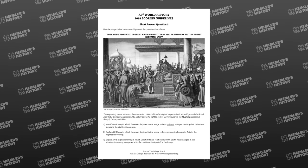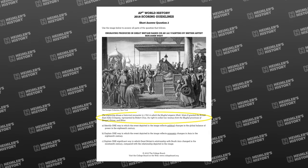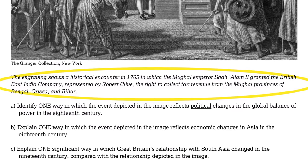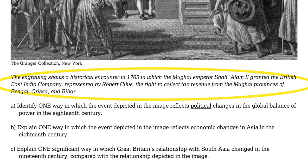I'll start with an example from AP World and then go on to AP US. This comes from the 2018 exam — a stimulus-based SAQ. Let's take a moment to figure out what we're looking at. Always read the explanations they give you; it will save you a lot of time and interpretation. The engraving shows a historical encounter in 1765 in which the Mughal Emperor Shah Alam II granted the British East India Company, represented by Robert Clive, the right to collect tax revenue from the Mughal provinces of Bengal, Orissa, and Bihar.